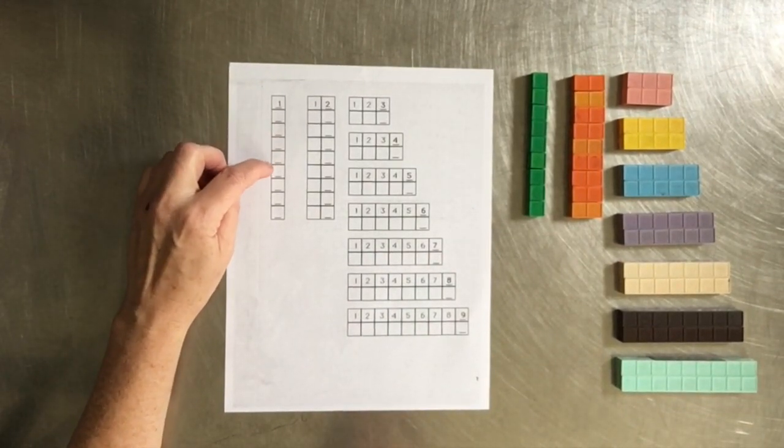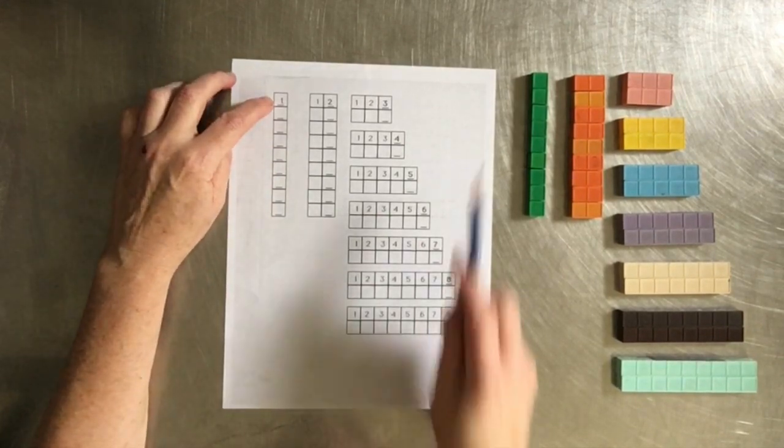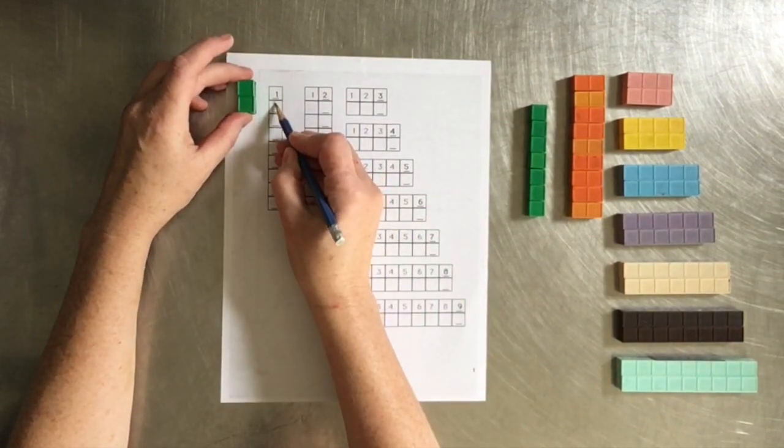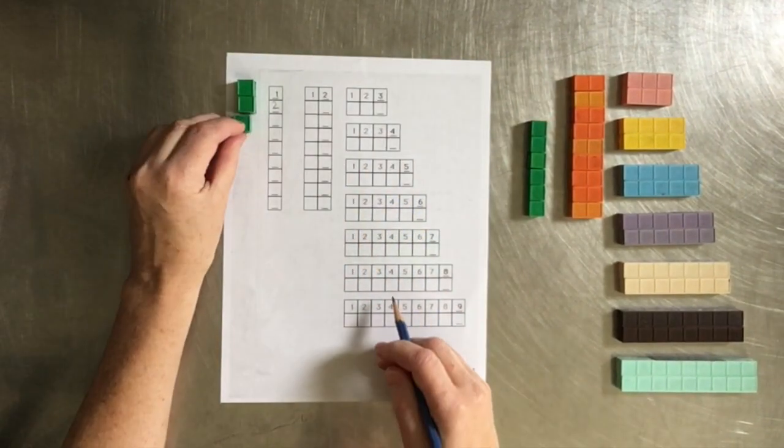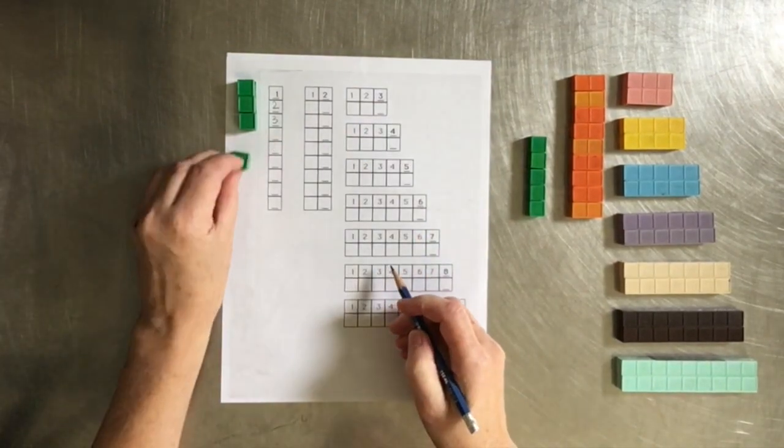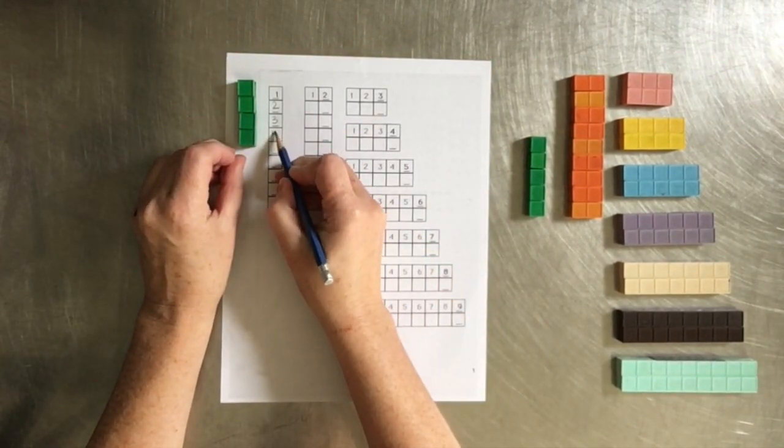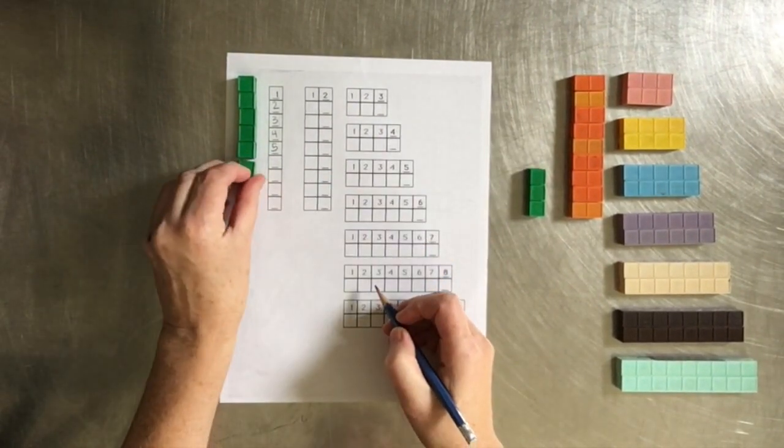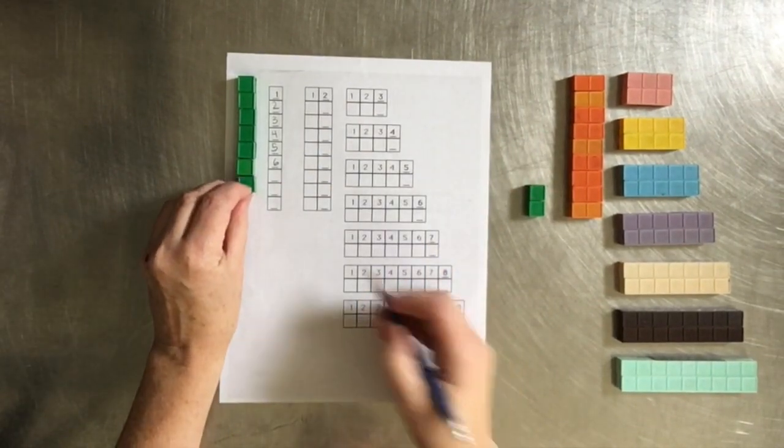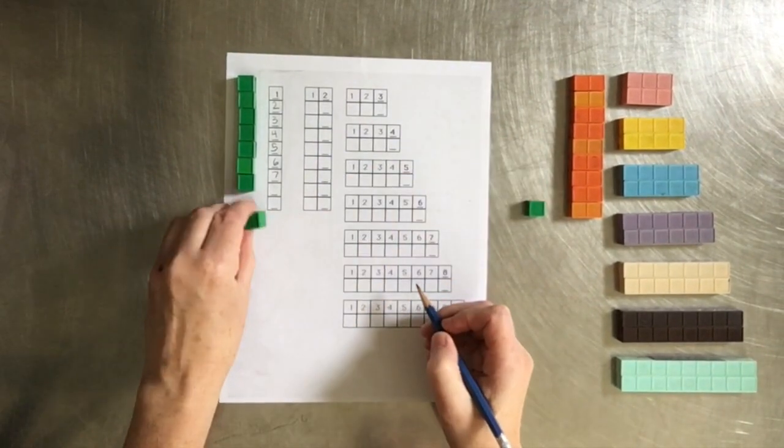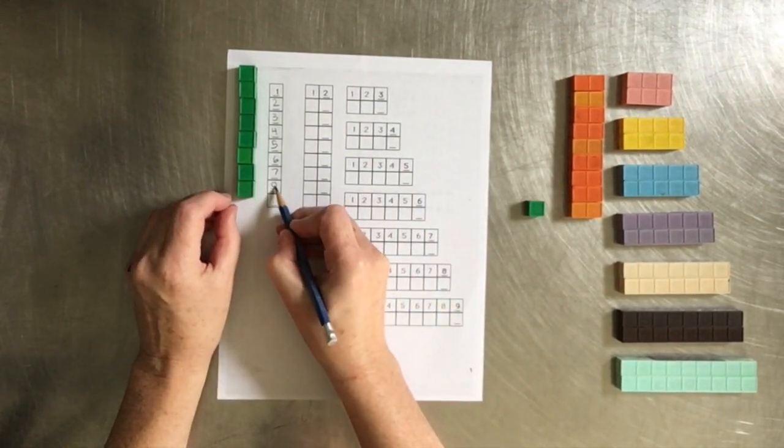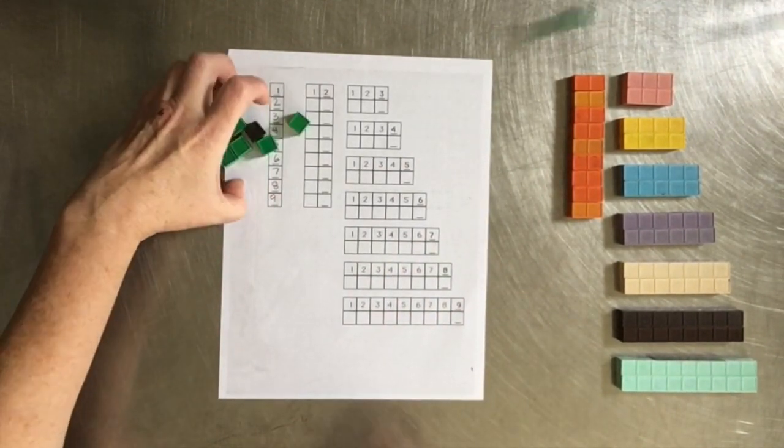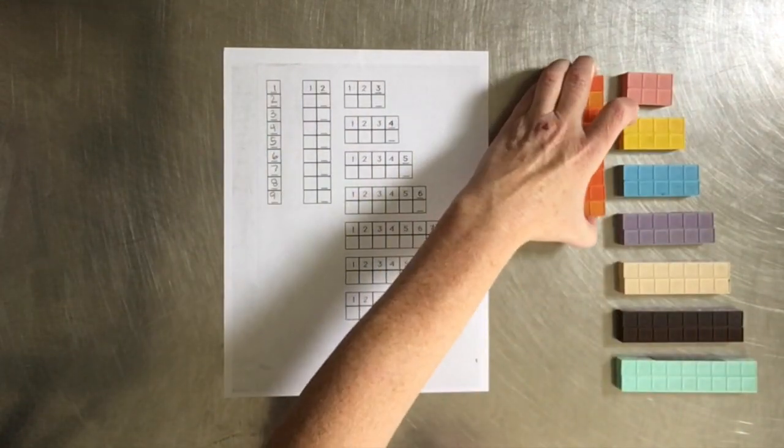So 1, 1 is 1, right? 2, 1 is 2. 3, 1 is 3. 4, 1 is 4. 5, 1 is 5. 6, 1 is 6. 7, 1 is 7. 8, 1 is 8. 9, 1 is 9. And then you can do the same with your 2's.